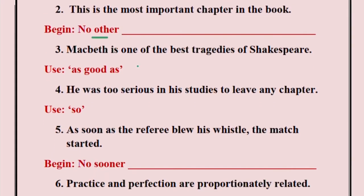Come to the third sentence: Macbeth is one of the best tragedies of Shakespeare. You will have to use 'as good as'. You have to add the word 'few' — this is also another form of degree of comparison. Write: Few other tragedies of Shakespeare are as good as Macbeth, because it is said 'one of the best'. Macbeth is not the best, but it is one of the best, which means there are few tragedies which are as good as Macbeth.